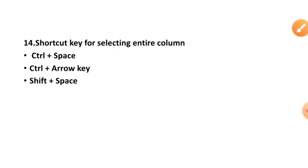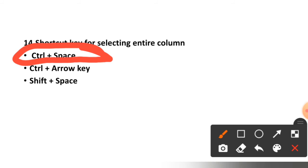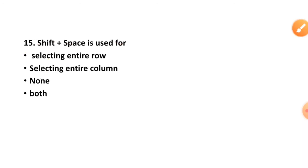Question number fourteen: which shortcut key selects the entire column? Control plus Space, Control plus arrow key, or Shift plus Space? Control plus Space is the shortcut key for selecting the entire column.